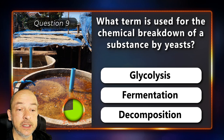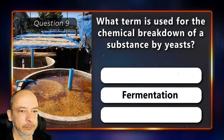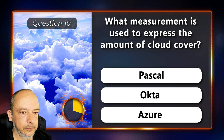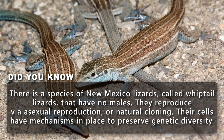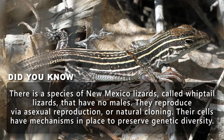Question 9: What term is used for the chemical breakdown of a substance by yeasts? Is it glycolysis, fermentation or decomposition? It's fermentation. Question 10: What measurement is used to express the amount of cloud cover? Pascal, octa or azure? The answer is octa. Did you know there is a species of New Mexico lizards called whiptail lizards that have no males? They reproduce via asexual reproduction or natural cloning, and their cells have mechanisms in place to preserve genetic diversity.